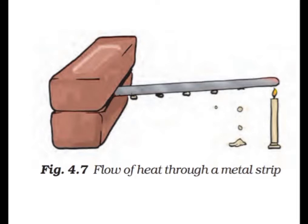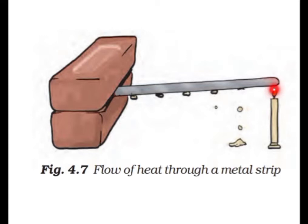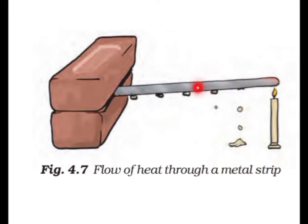Let us understand conduction with a diagram. Suppose you take a metal strip — for example, an aluminium scale — and place it between two bricks. You light a candle and bring one end of the scale in contact with the flame. What will happen is that the portion touching the flame will first become hot, then slowly and slowly the entire scale will become hot — this portion first, then this, then this. This happens because of the process of conduction.